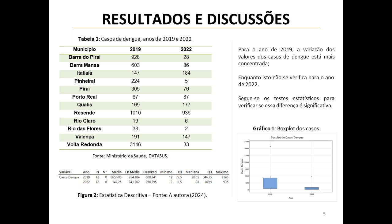In presenting their initial findings, the researchers note a marked difference in the distribution of dengue cases between 2019 and 2022. They observed a more concentrated distribution in 2019.